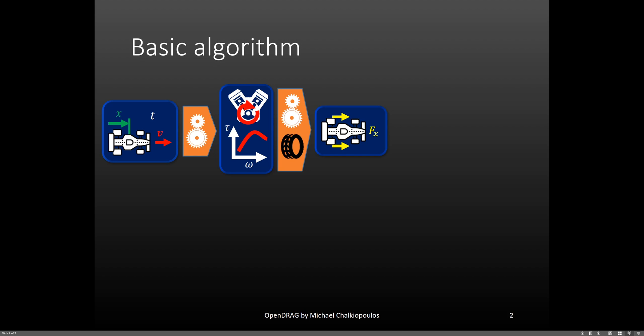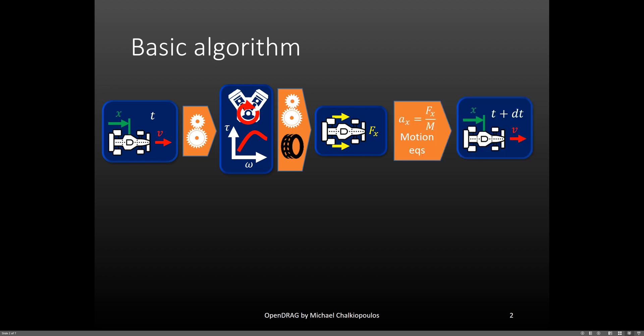Then, using the drivetrain model again but in the opposite direction, and then the tire model, we get the wheel torque and acceleration tractive forces. Then, using the equations of motion, we can get the state of the vehicle in the next step. The process starts with zero speed and loops through until the maximum speed is reached. When the maximum speed is reached, then it starts braking.